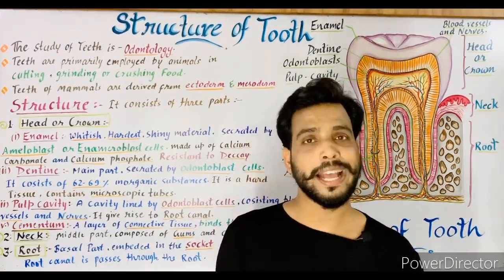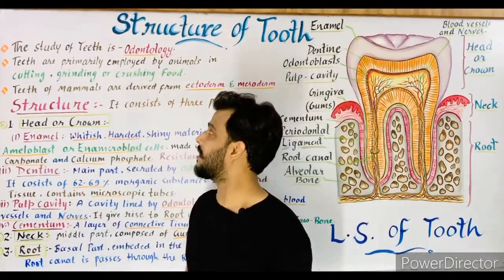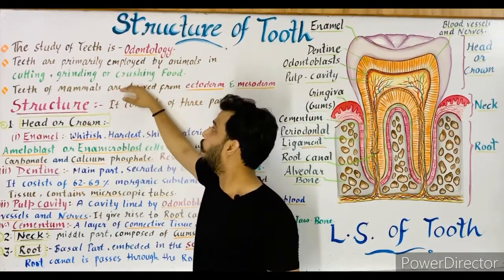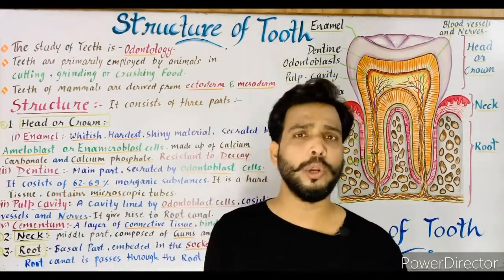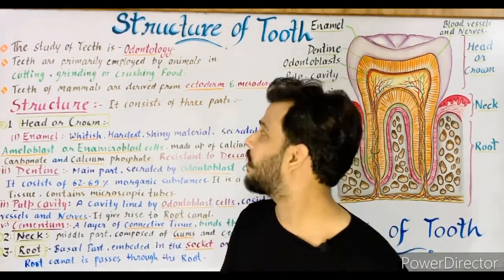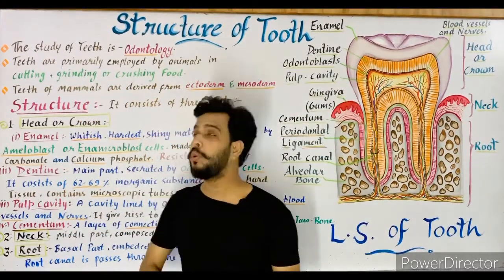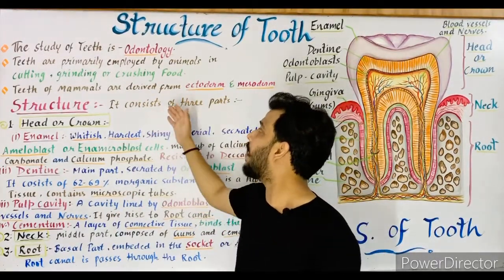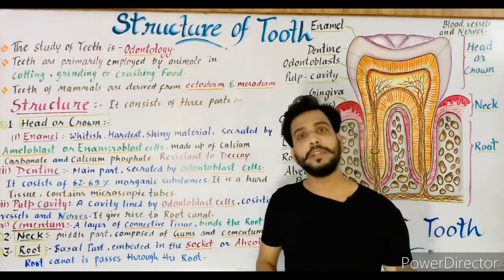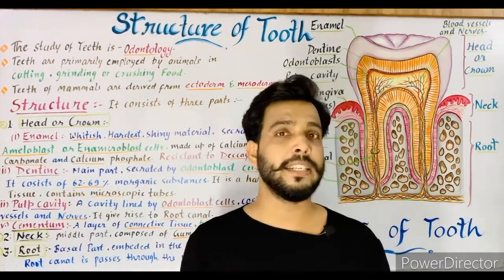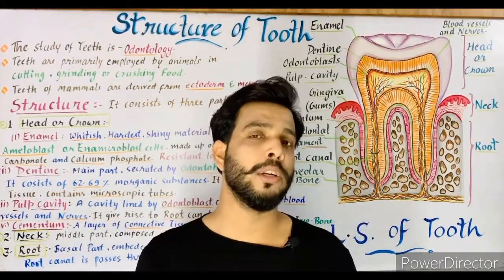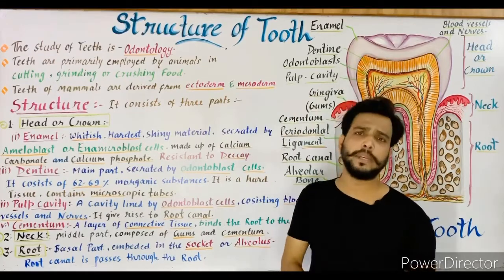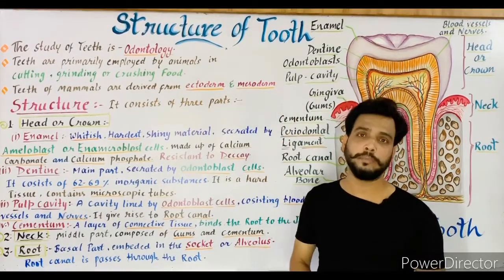Teeth are primarily employed by animals in cutting, grinding, or crushing food — that is the main function of teeth. The teeth of mammals are derived from ectoderm and mesoderm. There are three germ layers in our body — ectoderm, mesoderm, and endoderm — but teeth originate specifically from ectoderm and mesoderm.